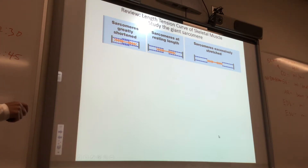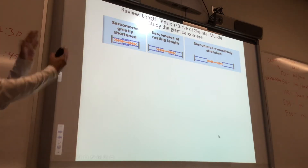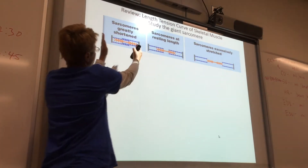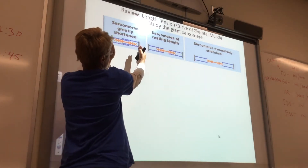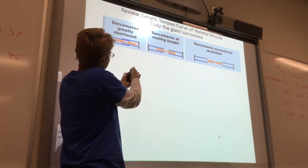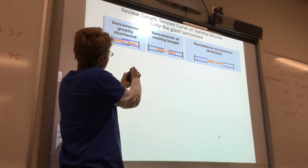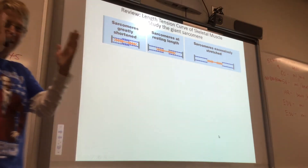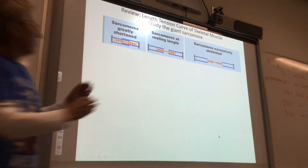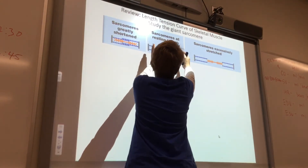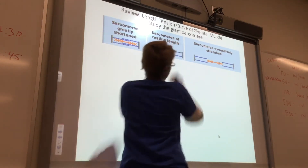But what if you start with your sarcomeres all squinched up? How much further are they going to be able to contract? Not much, because myosin is going to butt up against the Z-line — they'll only get a little bit of contraction. Whereas at the right length, you get a nice full contraction.